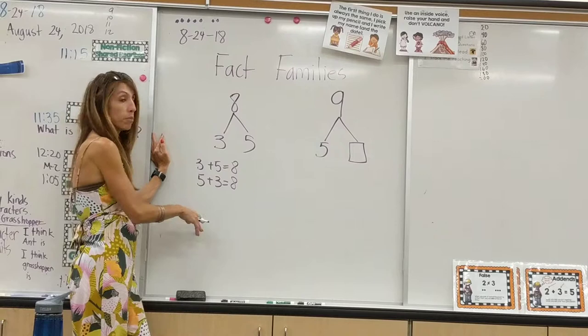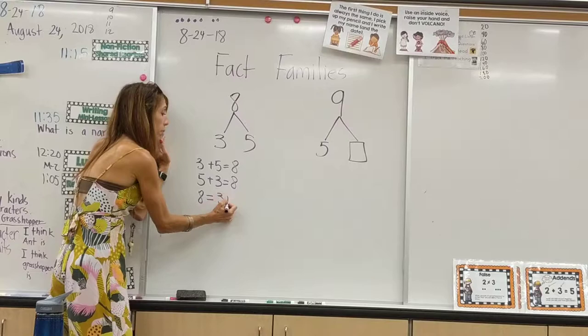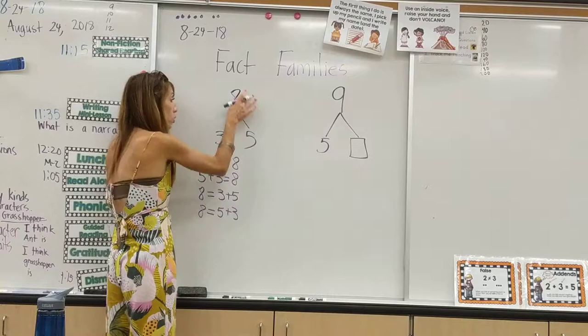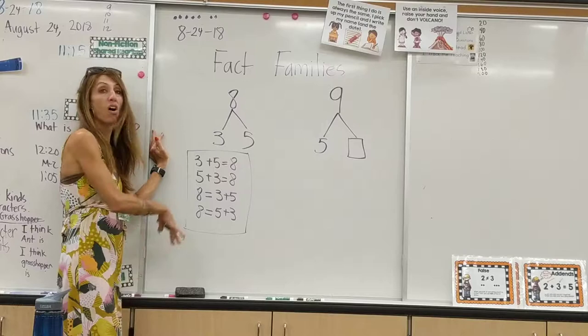Conversely, they can put the whole first in addition. Eight equals three plus five, and eight equals five plus three. So for this number bond, there are four addition equations that they can write that are all correct.